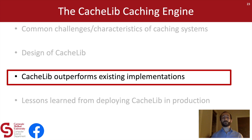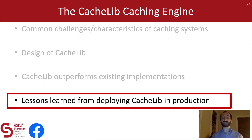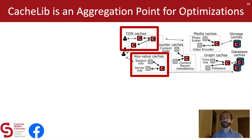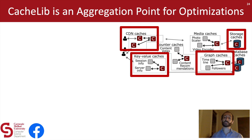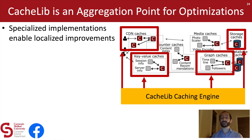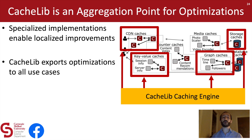Now that we've seen that CacheLib can outperform some of these existing implementations, I want to talk about lessons learned from deploying CacheLib in production at Facebook. In particular, we note that CacheLib serves as an aggregation point for optimizations. Consider what would happen with a specialized CDN cache implementation — improvements to it would really only benefit the CDN. The same would be true with specialized key-value caches, social graph caches, and storage caches. In general, specialized implementations tend to enable only localized improvements. This all changed when we deployed the CacheLib caching engine — now, when one makes improvements to the caching engine, these effects can be felt across the Facebook production environment. We tend to say that CacheLib exports optimizations to all caching use cases.